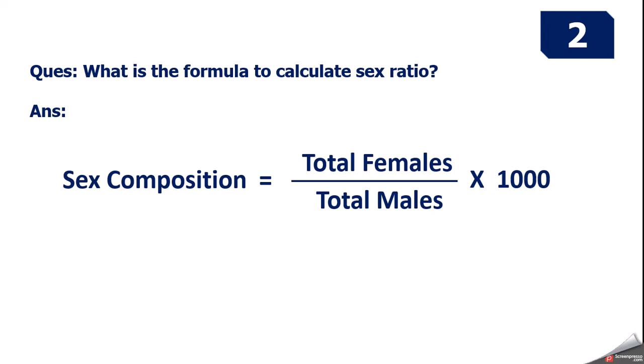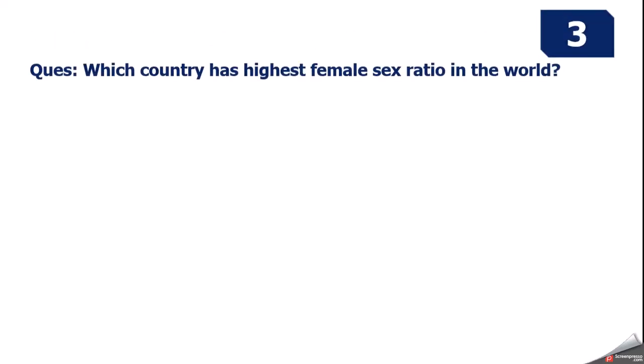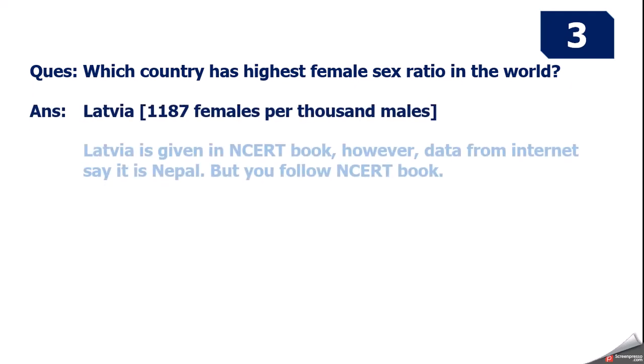Question 3: Which country has the highest female sex ratio in the world? Answer — It is Latvia: 1187 females per thousand males. This is the latest data in the NCERT book. Internet data shows Nepal now has the highest, but for examinations write Latvia only.